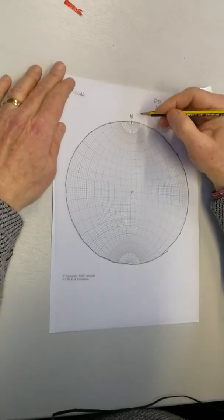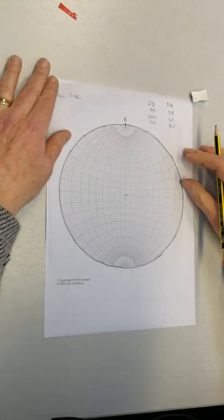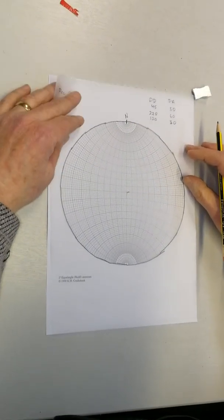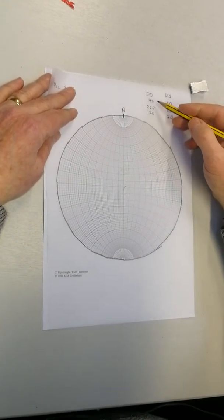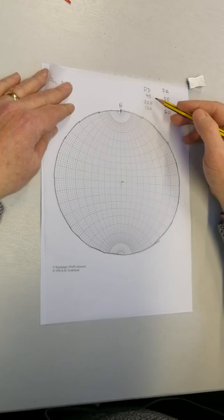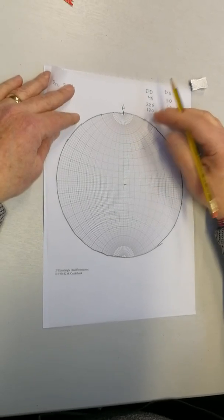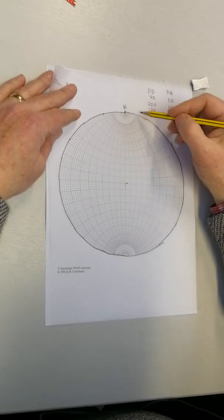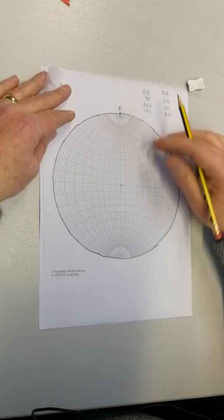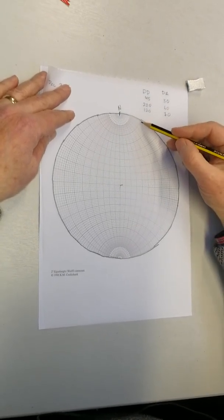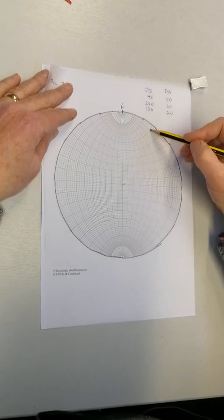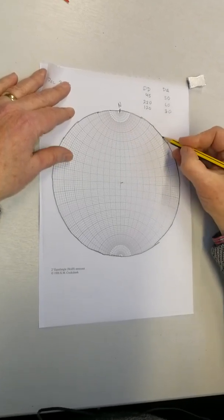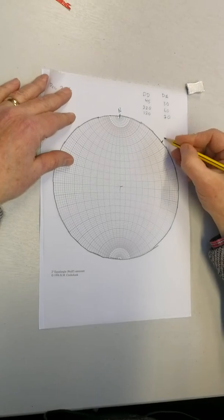On the outer edges of this circle that I've just traced is where we're going to find the dip direction. So the first one I want to do is 45. We come over here on this particular stereo net, the lines are slightly bolded each 10, so there's 10, 20, 30, 40, and there's 45. I'm just going to mark that and we're going to put down 45 degrees.